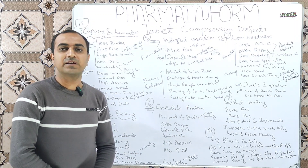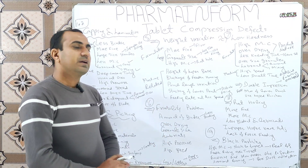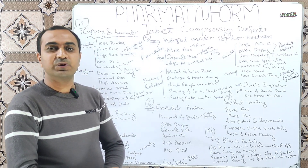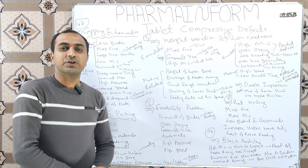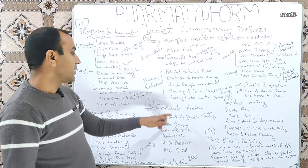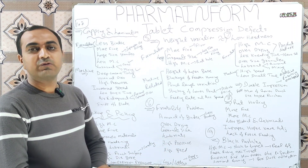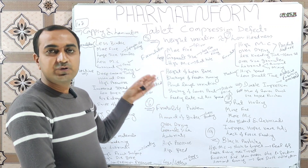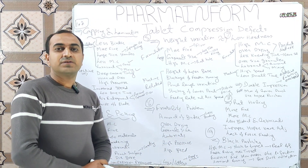Friability is defined as the percentage weight loss during a test in which tablet edges break down. Formulation-related issues that may result in friability: less amount of binder may result in friability — increase the amount of binder. If granules are over-dried it will also result in friability — always dry granules according to the standards of your BMR.